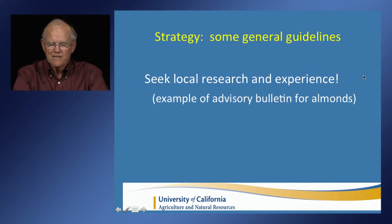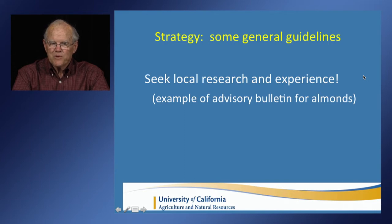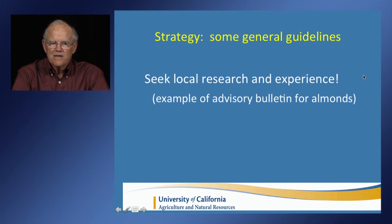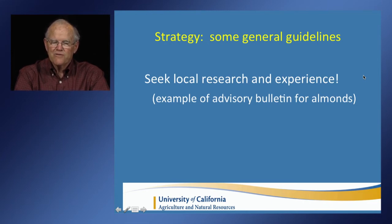The most important general guideline is to look for local research and experience. In areas where water supplies are limited, some farmers have experimented with deficit irrigation on their own. It's surprising how many have some experience when you start searching — often they don't realize how much they have to offer. There's also an abundance of crop-specific and sometimes region-specific research on deficit irrigation. California is particularly well-endowed with research and practical experience. So the very first step in approaching deficit irrigation is to do your own research: find who has done the work and who has tried practicing it in the area.